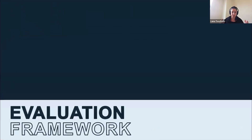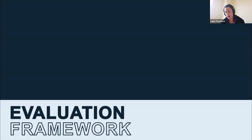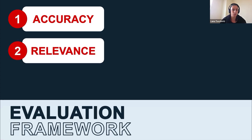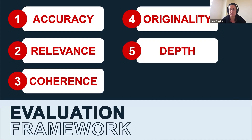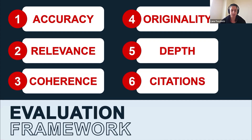Now let's look at a framework you could use when evaluating your Gen AI outputs. We'll be using one that specifically addresses AI-generated content — it's quite similar to the CRAP model from last week's webinar, but more specific to AI outputs. It doesn't have a fun acronym, but there are six different things to look at: accuracy, relevance, coherence and structure, originality, depth of analysis, and citations and referencing.